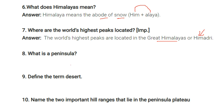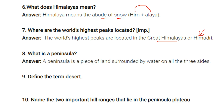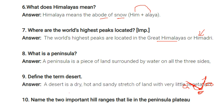What is a peninsula? A peninsula is a piece of land surrounded by water on all three sides. Going down south India — Tamil Nadu, Kerala — this area has the Bay of Bengal on one side, the Arabian Sea on another, and the Indian Ocean at the bottom, forming the peninsula.